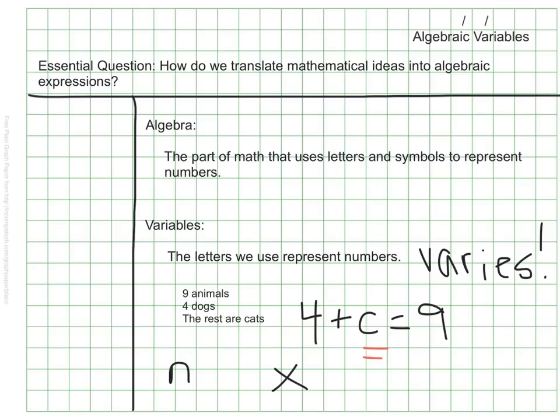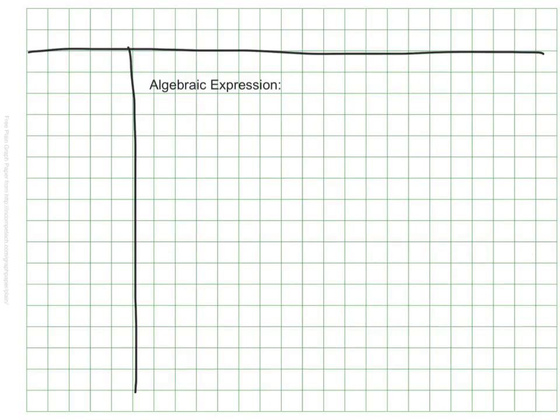There are two more things we want to define before we get there. The next term is algebraic expression. An algebraic expression is a mathematical phrase that might have numbers, variables, or operators. An operator is something like add, subtract, multiply, or divide.